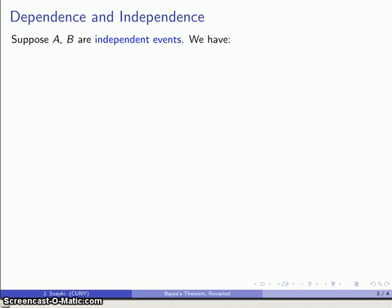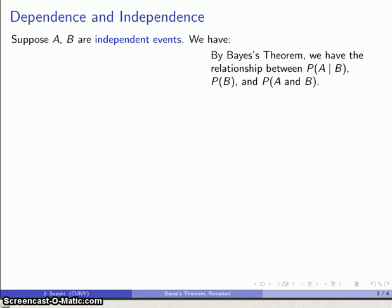So let's consider a pair of independent events. So first off, we have by Bayes' theorem, which applies whether or not the events are dependent or independent. We have the relationship of the probability of A given B is the same as the probability of both A and B divided by the probability of B.